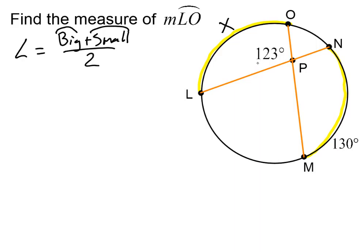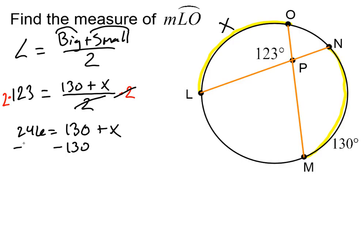In this problem, we are actually given the angle. The big arc would be 130. The small arc is the x. So let's plug in the angle 123 degrees into the angle position in the formula. The big arc is 130. The small arc is our x. We still divide by 2. In this problem, not all the numbers go on the same side, so we need to work backwards. To get rid of the divide by 2, we times by 2. And now I'm going to subtract 130 from both sides, and that will give me my value of x. My x is 116 degrees. That's how we use the formula to work backwards when we want to find an arc and we're given an angle.